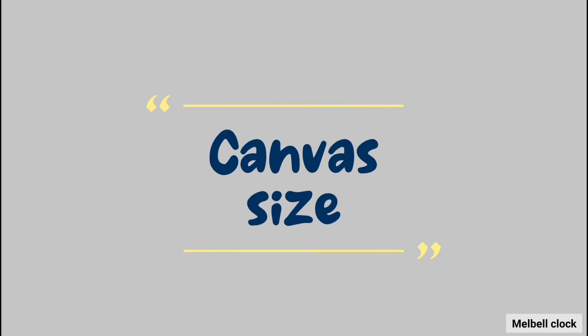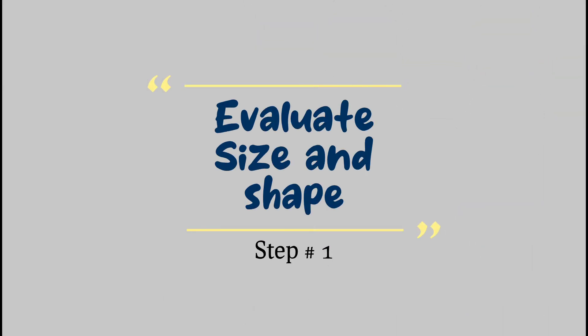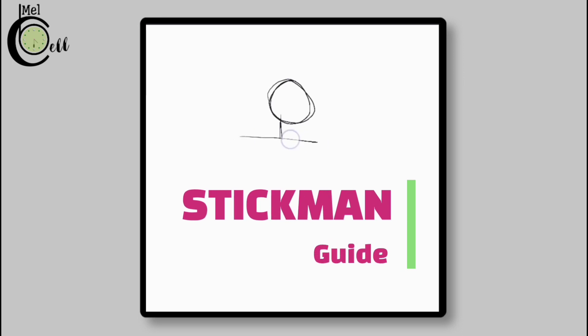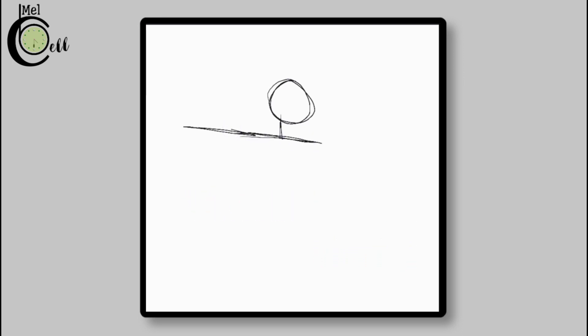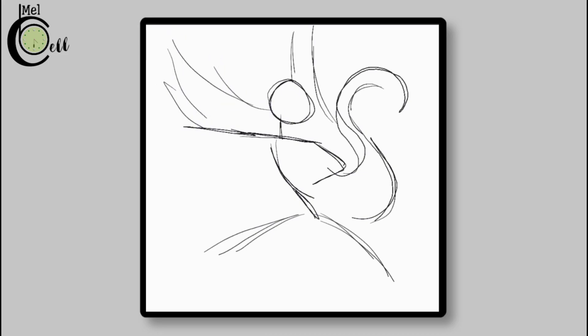First of all, select your canvas size. Here I am selecting an Instagram template. You may lock your canvas. Start out by drawing a very simple shape, or you can say stickman. This basically gives you a rough image of what the actual size of your drawing would be according to the canvas, where the position of your shapes should be, and how you have to adjust your drawing on canvas, because we have to put everything together on the canvas. So we are done with the placement of our drawing.